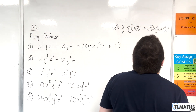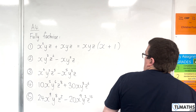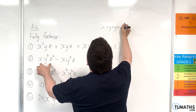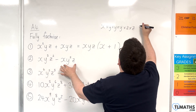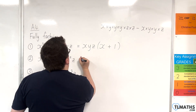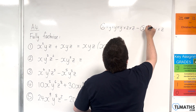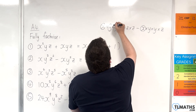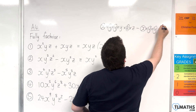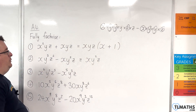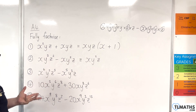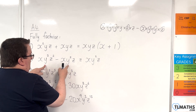Let's take a look at number two. Here we have x times y times y times y times z times z, take away x times y times y times z. Now what do they both have in common? They both have an x, they both have two y's — so they both have y squared — and they both have a z.